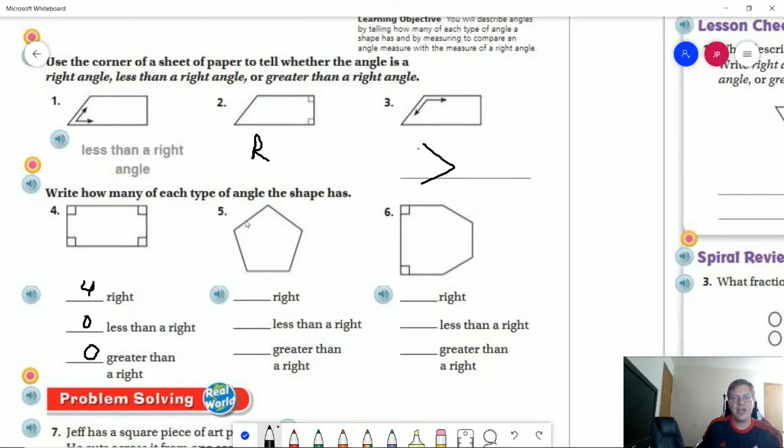Number five, anytime that we have a polygon like this where all five line segments are the same length, all of the angles inside that shape would be the same, just like if we had a square that had four sides of the same length. So we are not going to have any right angles, and all of these five angles are going to be the same measure, and they are all greater than a right angle.